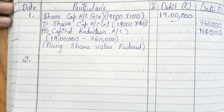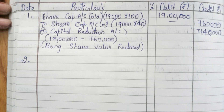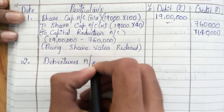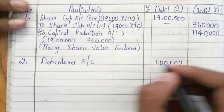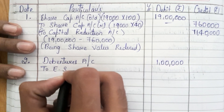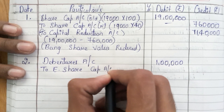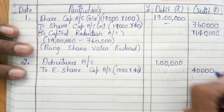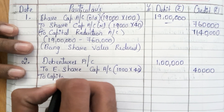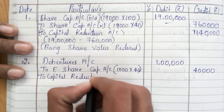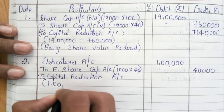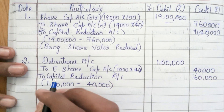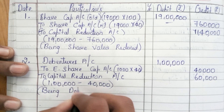This is the first journal entry. Now for the second journal entry, we are issuing new shares to settle the debentures. Debentures Account is debited — the value of debentures is ₹1 lakh. We are settling this ₹1 lakh by issue of equity shares, so Equity Share Capital Account is credited with 1,000 shares at ₹40 each, which is ₹40,000. The remaining balance of ₹60,000 is transferred to Capital Reduction Account. The narration: being debentures settled.